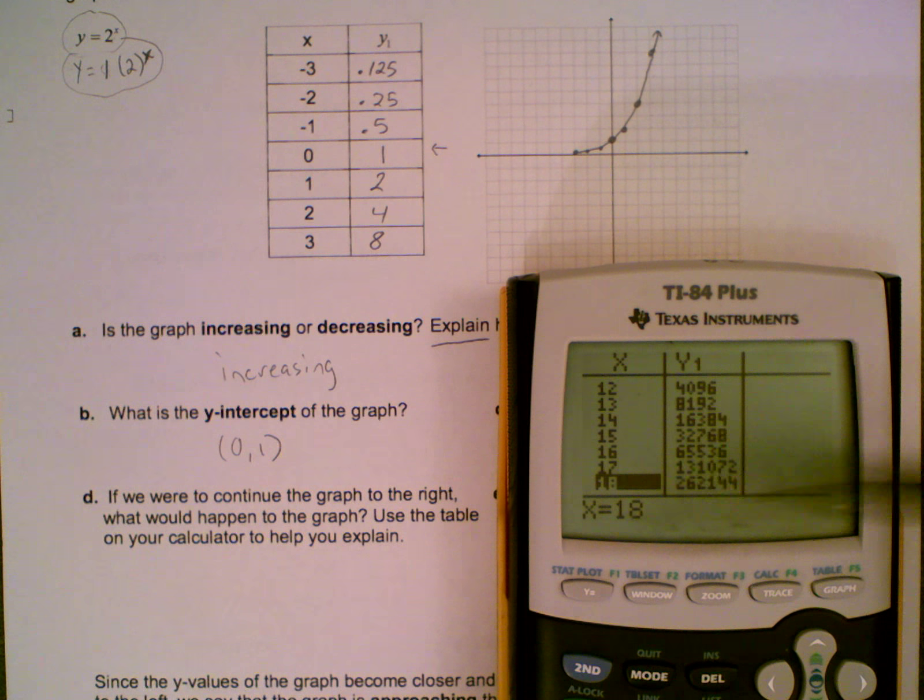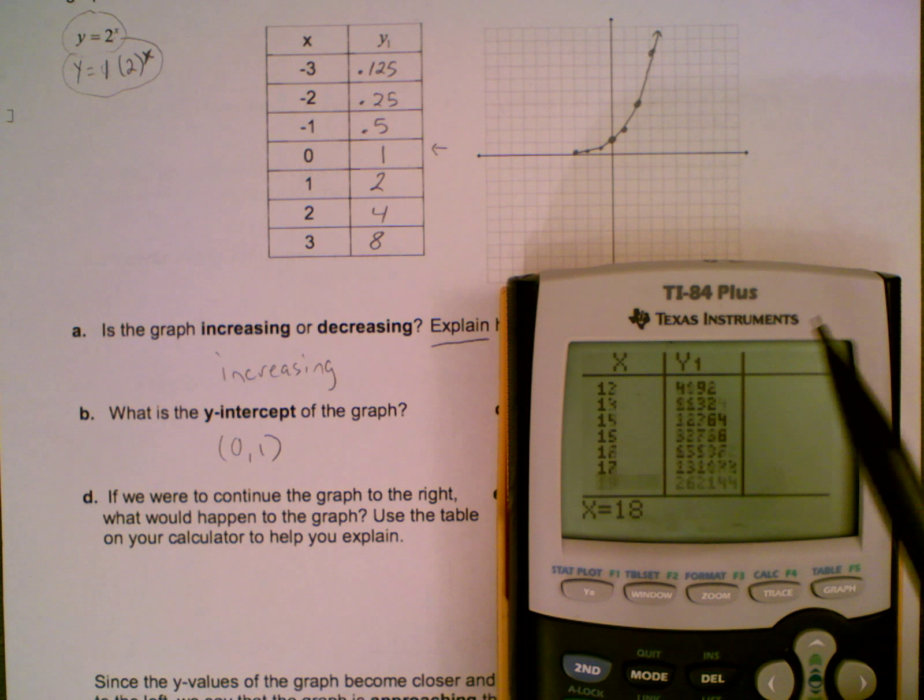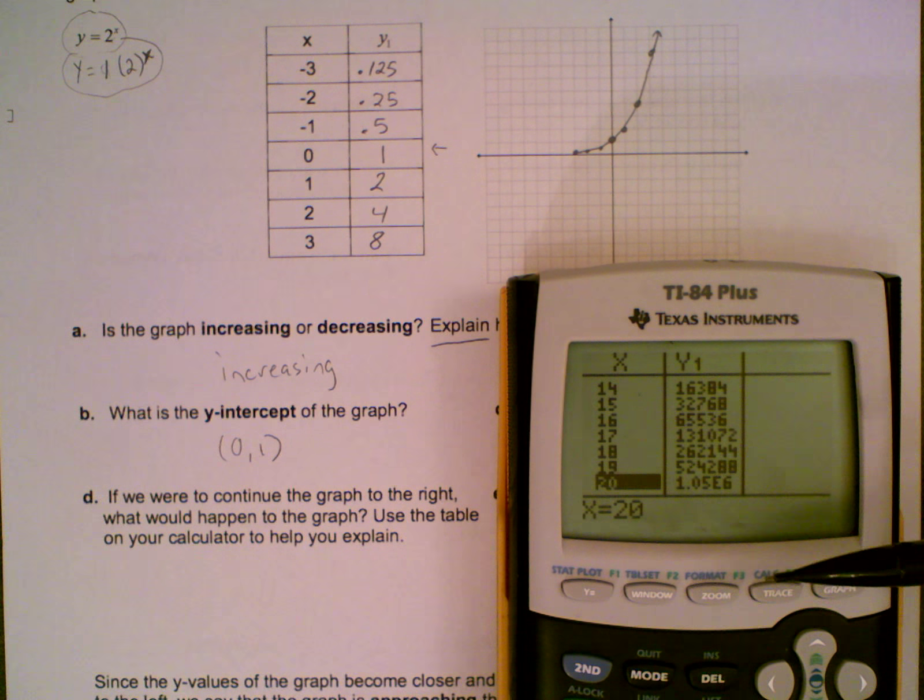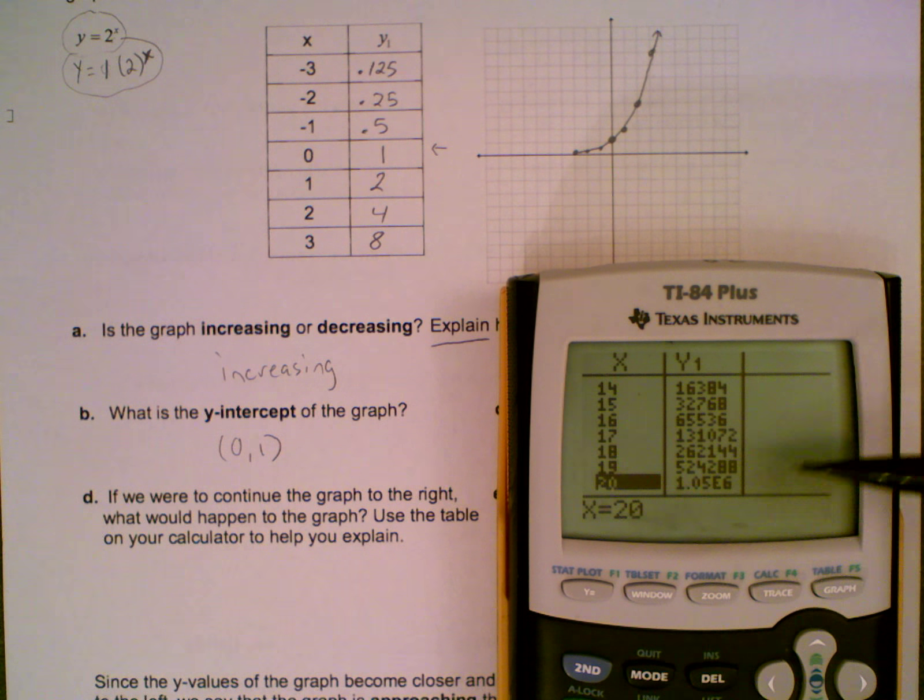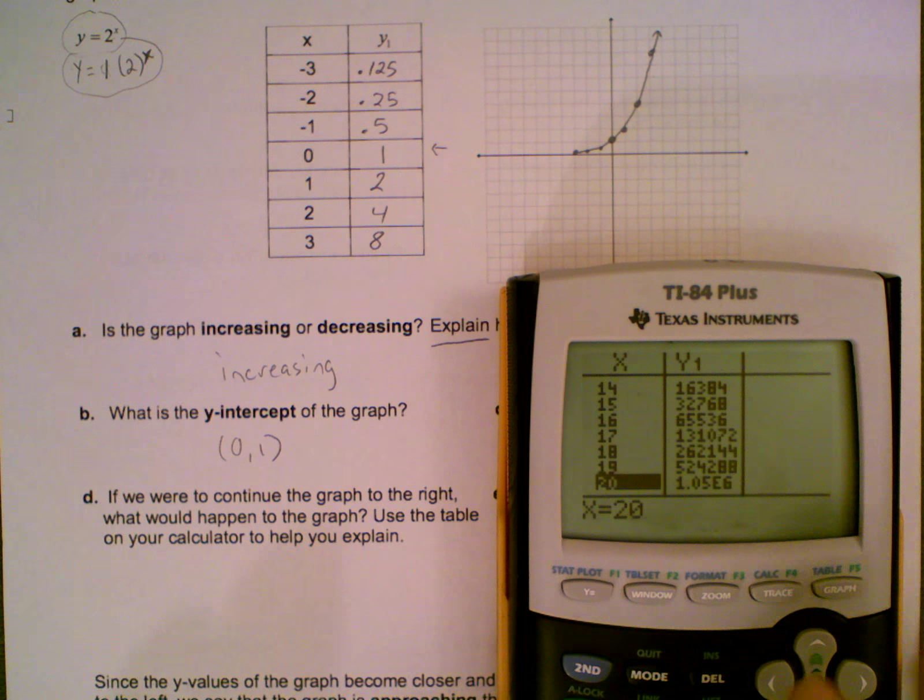So as you can see, just by 18, or let's get all the way to 20, we are already going super, super high. We're already into the millions here. So we can tell that as we go to the right, our graph is going to get really high really fast.